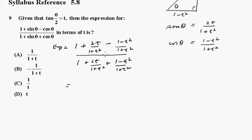Now putting this over a common denominator of 1 plus t squared we get 1 plus t squared plus 2t minus 1 minus t squared.